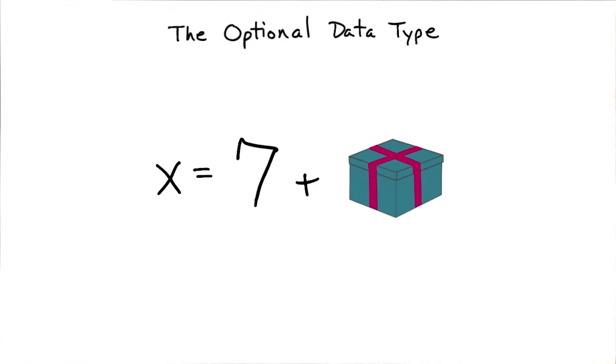We can't use optionals without unwrapping them. In this equation, the box represents an Int optional. It might have a value, or it might not. We can't tell until it's unwrapped.